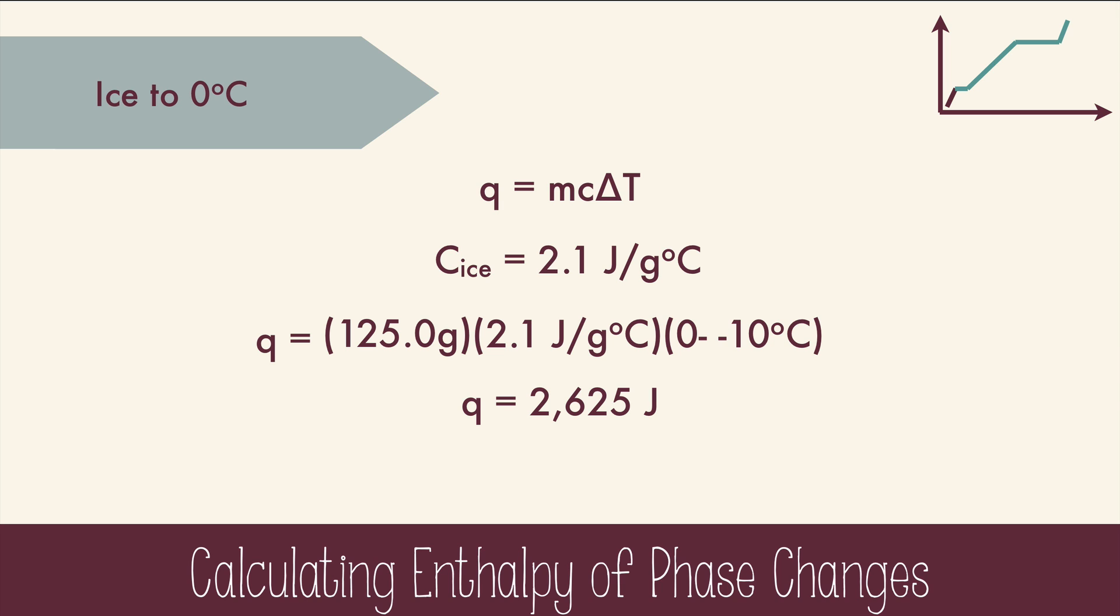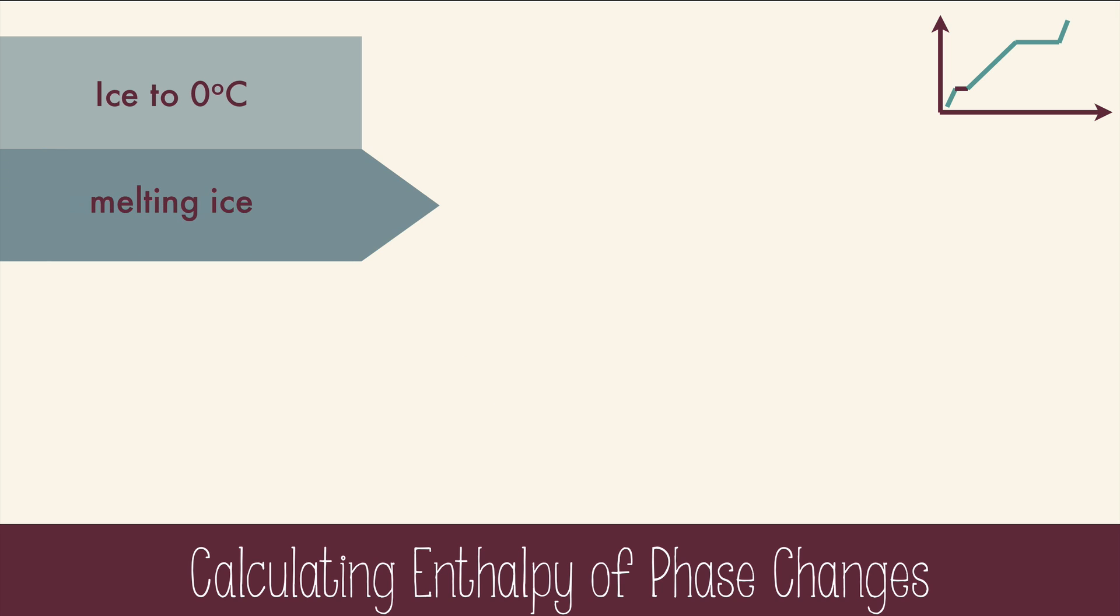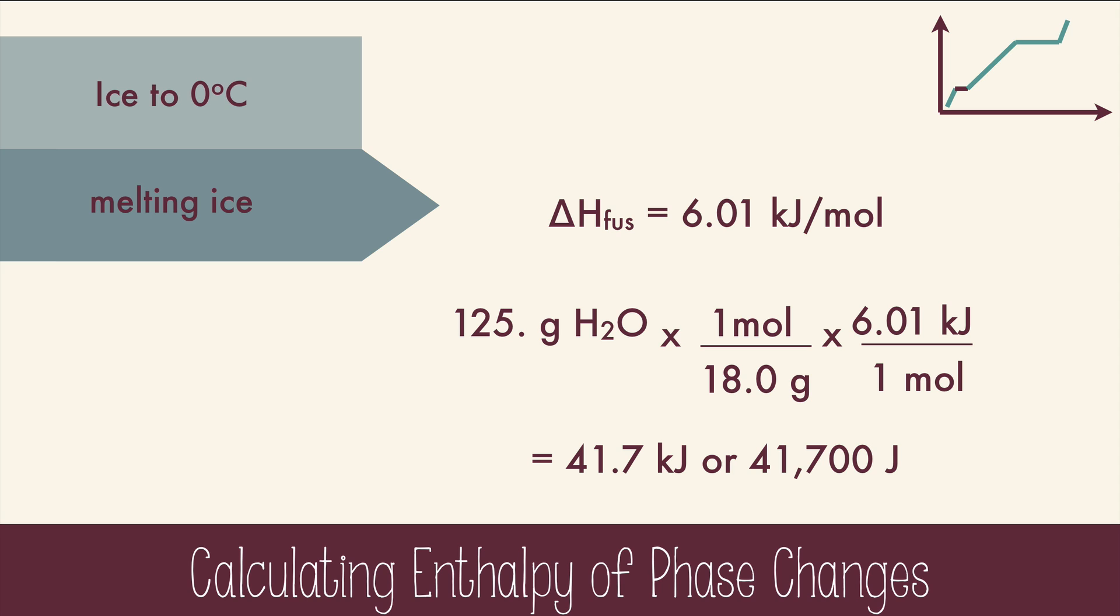The next step in the diagram is the melting of the ice. Melting ice doesn't change the temperature at all, so we can't use Q equals MCAT. Instead, we'll use the enthalpy of fusion and dimensional analysis. We'll start with the 125 grams of water. We'll multiply by the molar mass of water, and then multiply that by the molar heat of fusion, which gets rid of our grams and moles and leaves us just with kilojoules. So our answer is 41.7 kilojoules, or 41,700 joules.